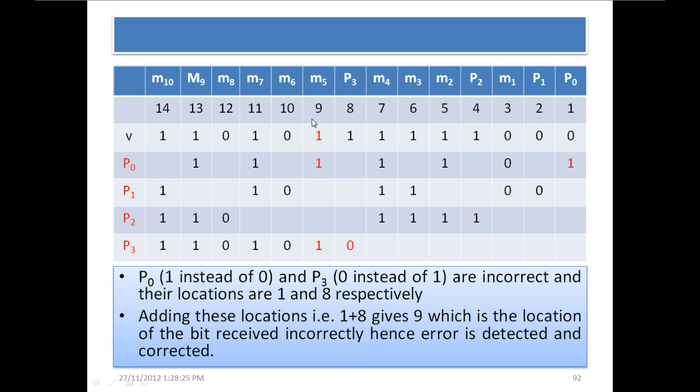This will always give, it is not by accident, it will always give the value of the incorrect bit whenever we receive. For example, if this 14 is received incorrect, then the values of these parity bits will be such that when we add these parity bits, the position of the parity bits, it will give us the incorrect bit location.